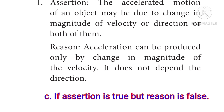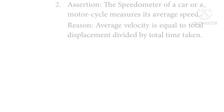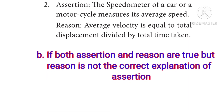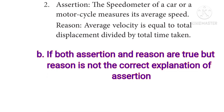Question 2 — Assertion: The speedometer of a car or a motorcycle measures its average speed. Reason: Average velocity is equal to total displacement divided by total time taken. The correct answer: both assertion and reason are true, but reason is not the correct explanation of assertion.